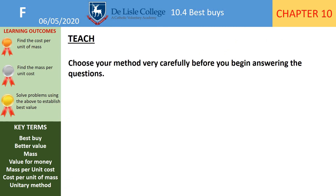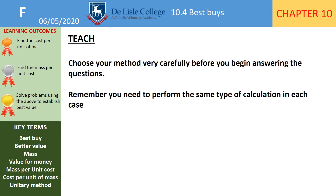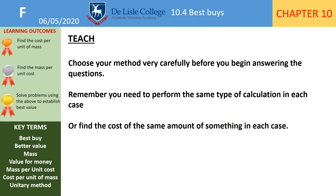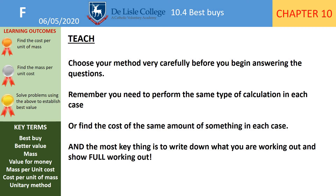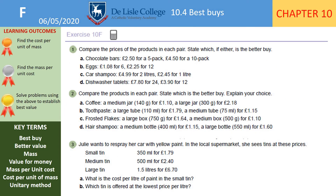A reminder of the four things: choose your method carefully before you begin; perform the same type of calculation for each item when comparing; or find the cost of the same amount in each case; and most importantly, write down what you're doing, show your calculation, then your answer. Don't forget to answer the question at the end. Here's exercise 10F, questions 1 to 3 — pause the video while you work through those.